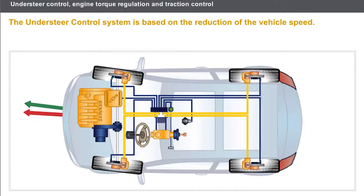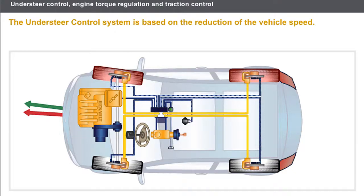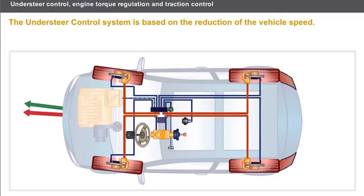The understeer control system is based on the reduction of the vehicle speed. The computer takes account of the information from the sensors to calculate the path followed by the vehicle and the path desired by the driver. The correction is made by the following actions: braking of two or four wheels at different pressures, and the reduction in the engine torque.